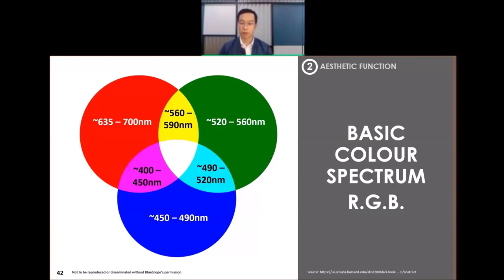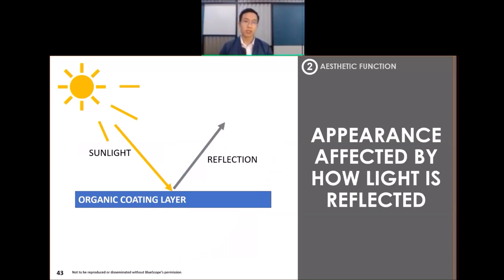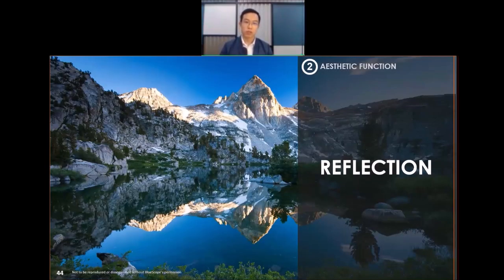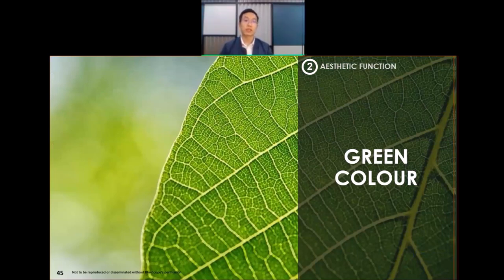All objects illuminated under the sun appear to have a certain color, and this color is shown by reflection. Here I'm showing an organic coating layer reflecting sunlight - the reflection is affected by how the light is reflected. Simply put, it's like a mirror: you can only see an object if it's illuminated in front of the mirror; with no light, you won't see any color.